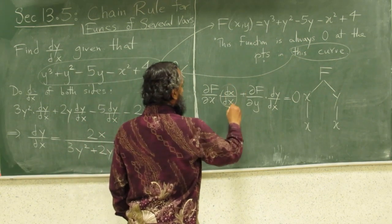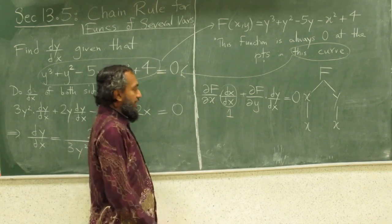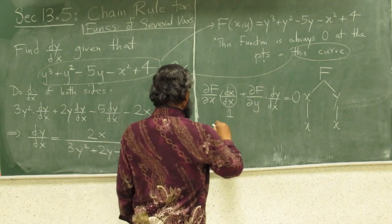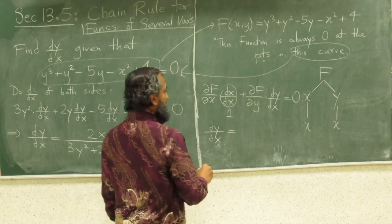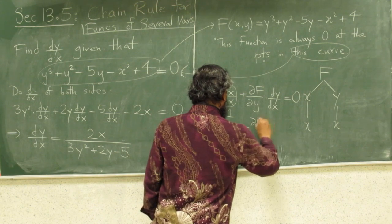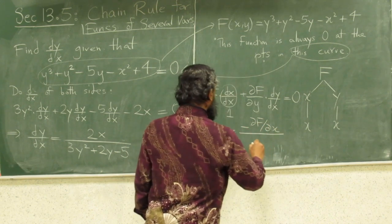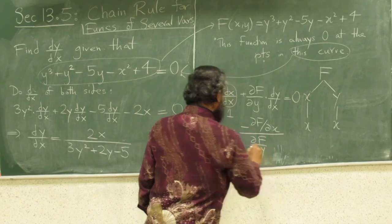Okay, now, from here, dx dx is just 1. How does x change with respect to x, what's the derivative of x with respect to x, it's just 1. So, if you rearrange all this, you get that dy dx is minus df dx over df dy.